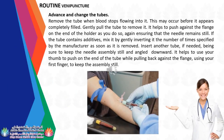Advance and change the tubes. Remove the tube when blood stops flowing into it — this may occur before it appears completely filled. Gently pull the tube to remove it, pushing against the flange on the end of the holder while ensuring the needle remains still. If the tube contains additives, mix it by gently inverting it the number of times specified by the manufacturer as soon as it is removed. Insert another tube if needed, keeping the needle assembly still and angled downward.